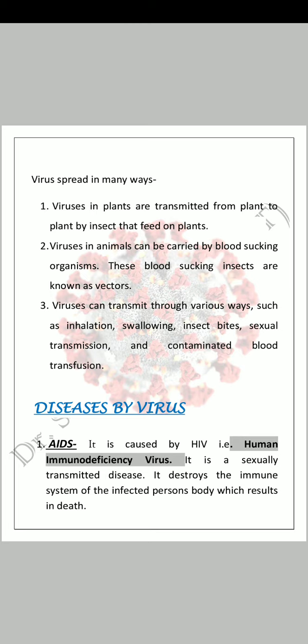Next comes diseases caused by viruses. First comes AIDS. It is caused by HIV, that is Human Immunodeficiency Virus. It is a sexually transmitted disease. It destroys the immune system of the infected person's body, which results in death. HIV virus body کے immune system کو پوری طرح سے destroy کر دیتا ہے، جس کی وجہ سے body weak ہوتی چلی جاتی ہے۔ It is mostly spread through sexual transmission, but blood-to-blood contact سے بھی ہو سکتا ہے۔